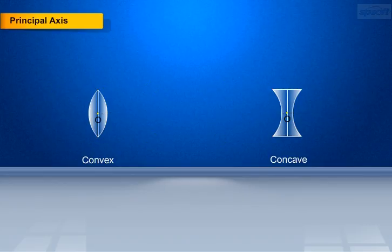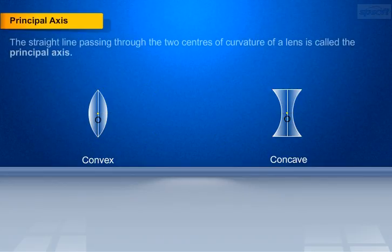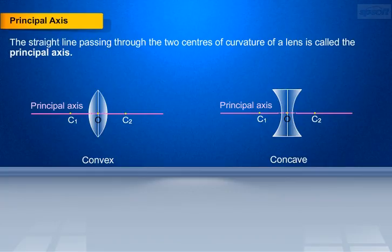Principal axis. The straight line passing through the two centers of curvature of a lens is called the principal axis.